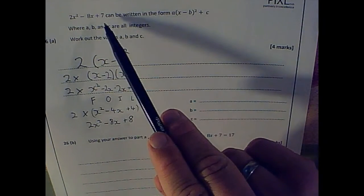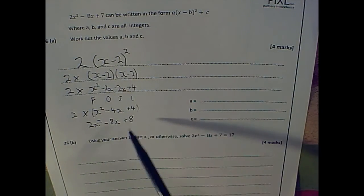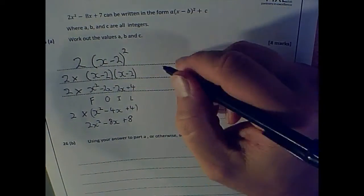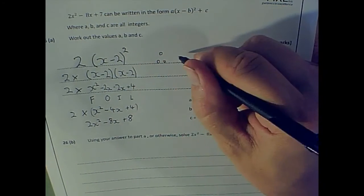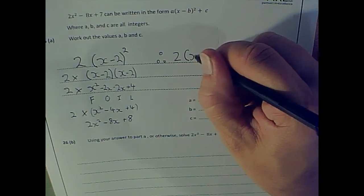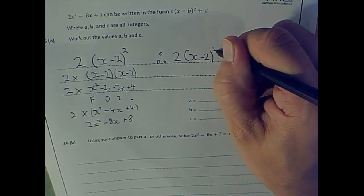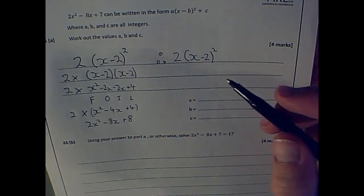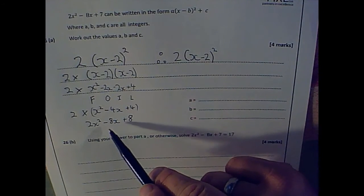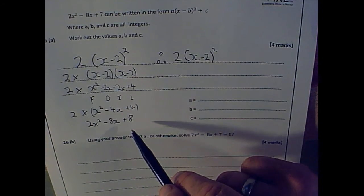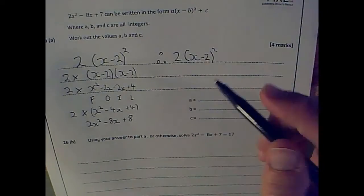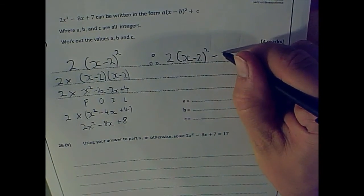But that's not quite that. That's one less. So I have to take 1 off this. So therefore, it's 2x minus 2 squared, and that would give me 2x squared minus 8x plus 8. I've just shown that that's what that gives me. But I want plus 7, so I'm going to take away 1.